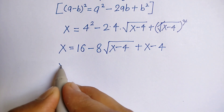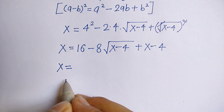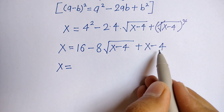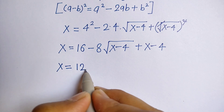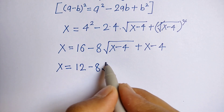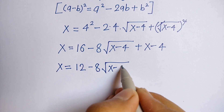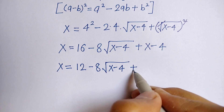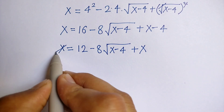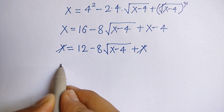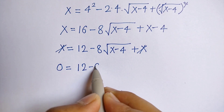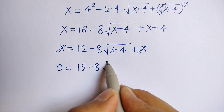So x is equal to 16 minus 4, which is 12, minus 8 into root x minus 4. Now the x on both sides: x minus x gives 0, so 0 is equal to 12 minus 8 into root x minus 4.